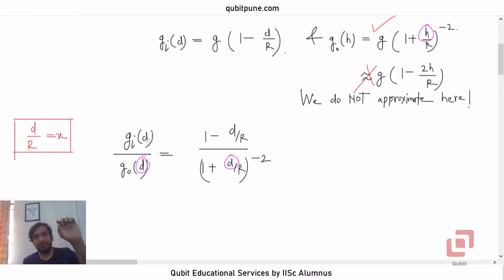So what will this be? We will get 1 minus X upon 1 plus X raised to negative 2. In other words, it will be 1 minus X into X plus 1 the whole square. 1 minus X upon 1 plus X raised to negative 2, so when it goes to the numerator it becomes positive.